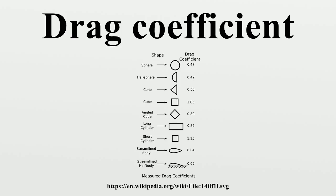A streamlined body looks like a fish or an airfoil with a small angle of attack, whereas a bluff body looks like a brick, a cylinder, or an airfoil with a high angle of attack. For a given frontal area and velocity, a streamlined body will have lower resistance than a bluff body. Cylinders and spheres are taken as bluff bodies because the drag is dominated by the pressure component in the wake region at high Reynolds number. To reduce this drag, either the flow separation could be reduced or the surface area in contact with the fluid could be reduced — a reduction necessary in devices like cars and bicycles to avoid vibration and noise production.